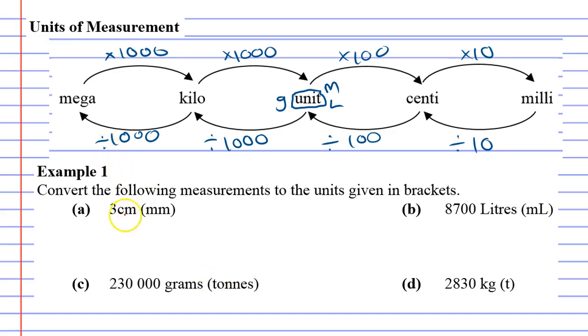First, we're going from centimeters to millimeters. Looking at the diagram, if I follow the direction of the arrow from centimeters to millimeters, it tells me to multiply by 10. So 3 times 10 equals 30, which means 30 millimeters.